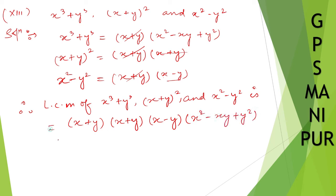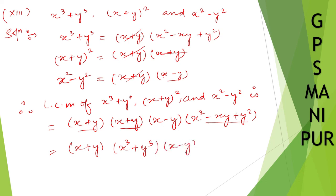I hope nothing is left. So now, x plus y into x plus y — you can write down as x cube plus y cube. And x minus y — so x plus y into x minus y, you can write down as x square minus y square. So x cube plus y cube is the required LCM.